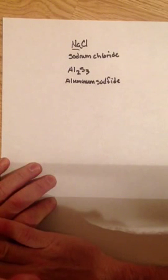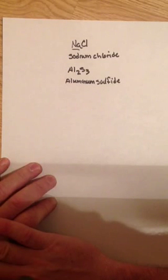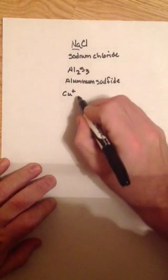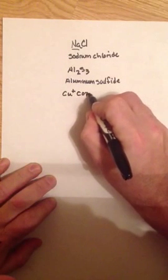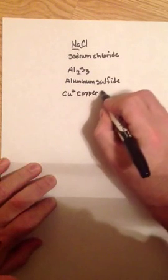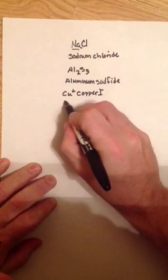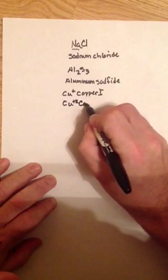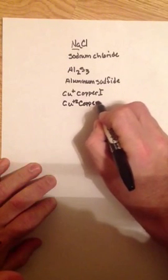Now what can be tricky is if you get elements that are in the transition groups, because those elements can have more than one possible charge in some cases. A good example of that is copper. Copper can have a plus one charge, which is called copper one, or a plus two charge, which is called copper two.